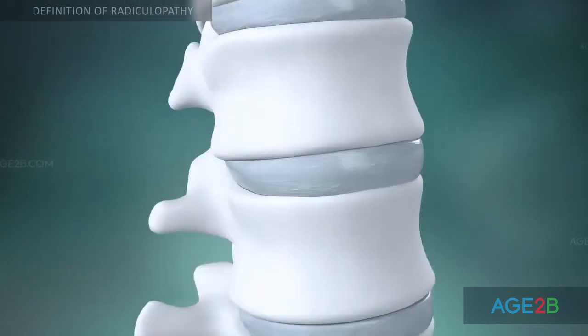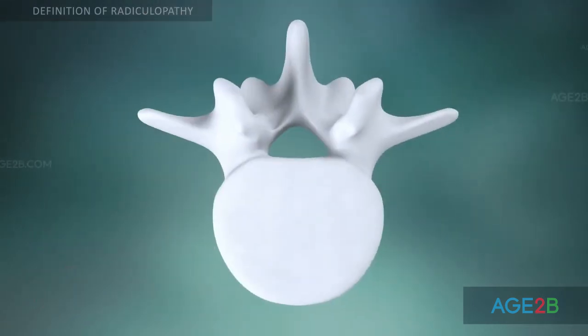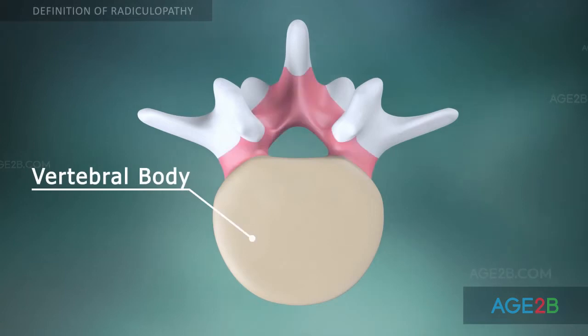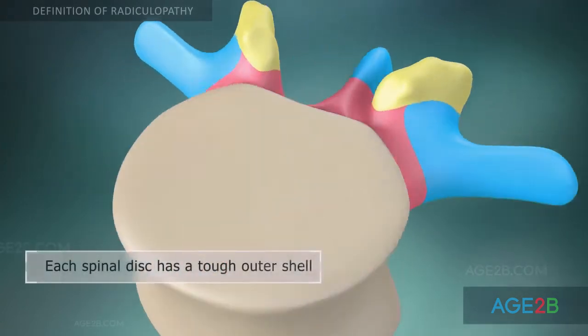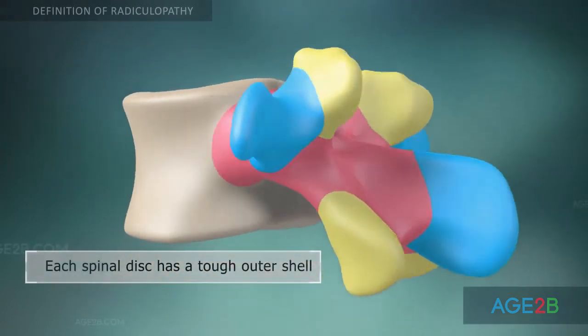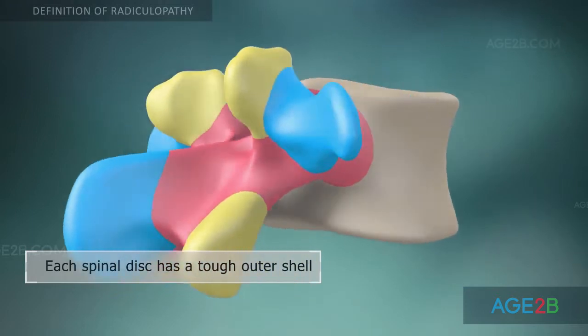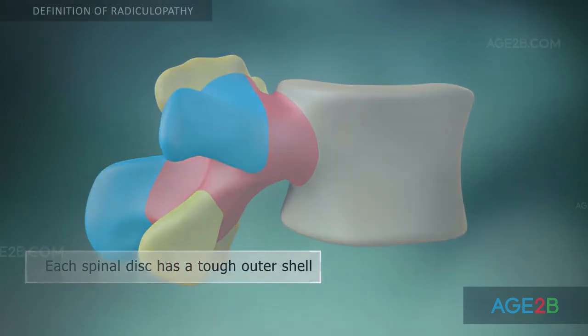A typical vertebra consists of a body and a vertebral arch, which has several processes for articular and muscular attachments.